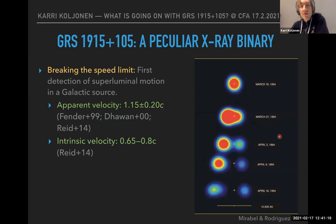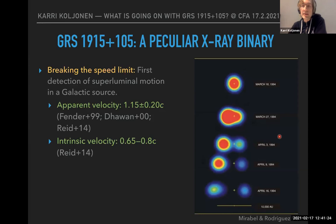Many of you probably know 1915 also as the first superluminal motion detected in a galactic source, where the apparent velocity of the jet runs at 1.15 times the speed of light, which relates to an intrinsic jet velocity of about 0.7c.